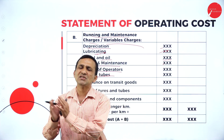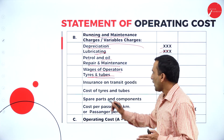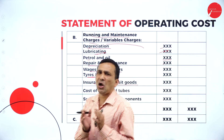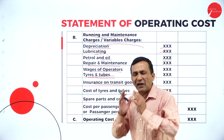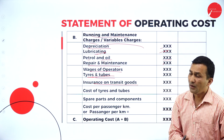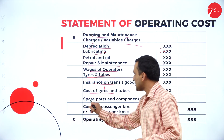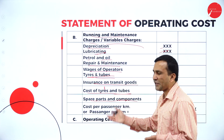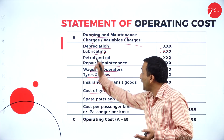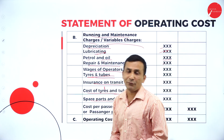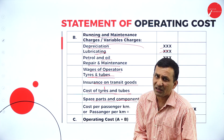Tires and tubes — if the vehicle is running, the depreciation value, the tire value, which is also varied. Insurance on transit goods: we are not always talking only about passenger transport. Sometimes we depend on goods transportation. At the time of carrying goods, you need to do insurance, which is a variable; but if they specify only insurance, it comes under fixed. Cost of tires and tubes is also varied. Spare parts and components related to transportation are also varied. After taking the total of variable charges, we find the variable cost per passenger kilometer or goods carried per ton, by dividing the total by kilometers run.